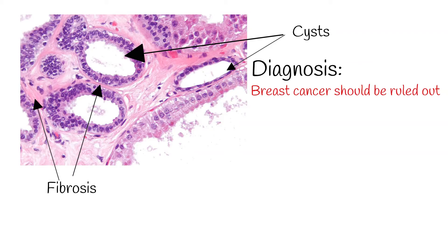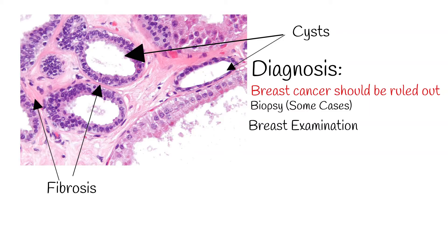Fibrocystic breast is an exclusion diagnosis, meaning breast cancer should first be ruled out. Nipple fluid aspiration can also be used as a method to classify cyst type. Sometimes biopsy or fine needle aspiration are indicated. The breast is examined visually and manually, and axillary and neck lymph nodes should also be examined.